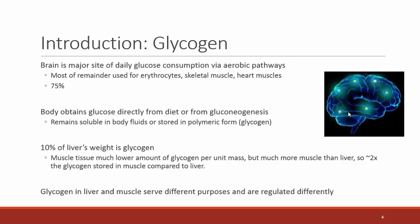Once we have glucose, we need to store it so that we have it when we need it. Glycogen is stored in the most concentrated form in the liver — 10% of the liver's weight is actually glycogen. Though it's less concentrated in the muscle, we have so much more muscle mass compared to liver mass that by quantity we store much more glycogen in our muscles. The glycogen in the liver and muscles serve different purposes and are regulated differently.